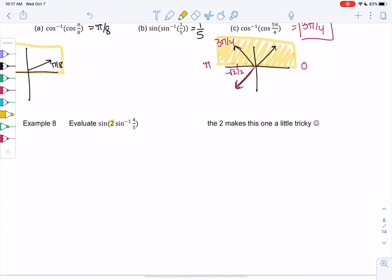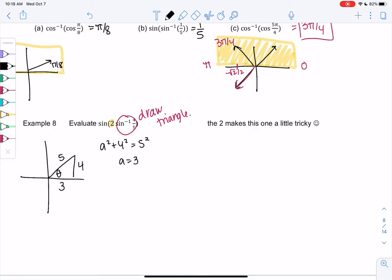The 2 is going to make this one a little tricky. So these don't cancel out. The 2 kind of prevents us from doing that. This is basically like saying f of 2 g of x. So we have to deal with that 2. So let's draw the triangle. Anytime I have these inverse functions, I like to draw the triangle. So we have sine inverse of 4 fifths. So theta opposite is 4. Hypotenuse is 5. If anyone remembers special triangles, you might remember this is 3, 4, 5. But you could do a squared plus 4 squared is 5 squared. And you should get a equals 3.